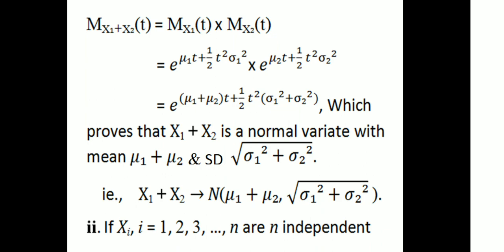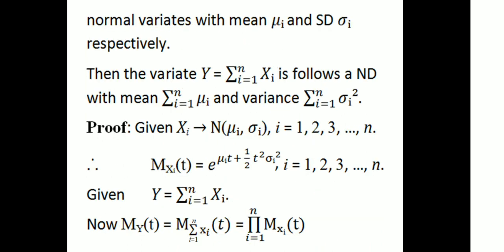Second additive property: if Xi, for i = 1, 2, 3, ..., n are n independent normal variables with mean μi and standard deviation σi respectively, then the variable Y = Σ(i=1 to n) Xi follows a normal distribution with mean Σμi and variance Σσi².